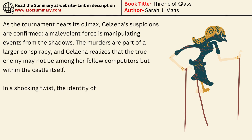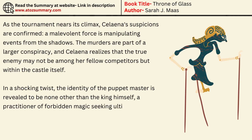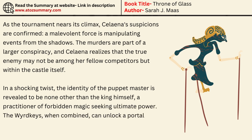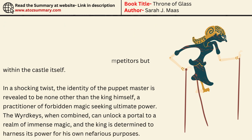In a shocking twist, the identity of the puppet master is revealed to be none other than the king himself, a practitioner of forbidden magic seeking ultimate power. The wordkeys, when combined, can unlock a portal to a realm of immense magic, and the king is determined to harness its power for his own nefarious purposes.